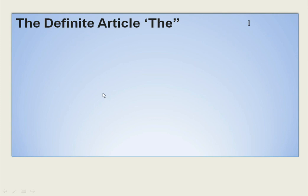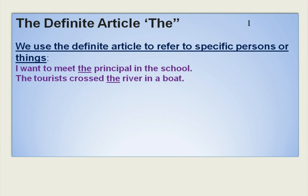Let us see in what context we use the definite article. We use the definite article to refer to specific persons or things. For example: 'I want to meet the principal in the school.' Here, 'THE PRINCIPAL' means we are speaking about the specific person of that particular school — there is only one principal, who is the head of that school or institution.